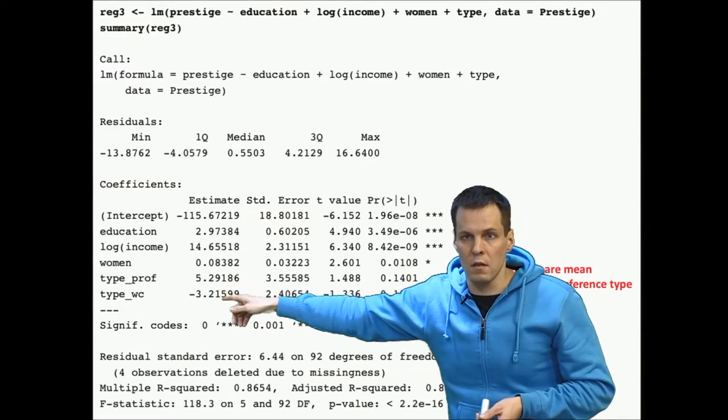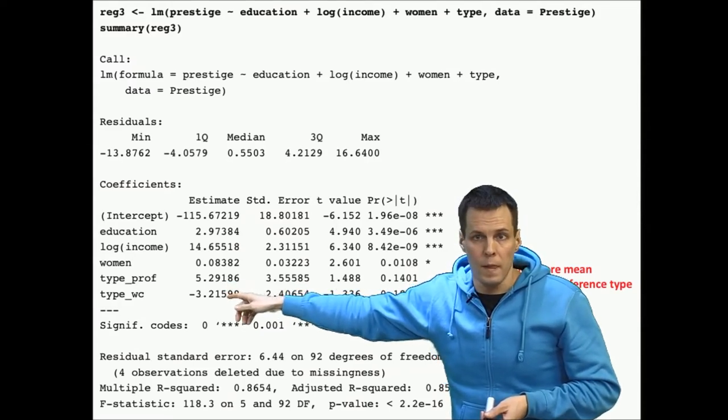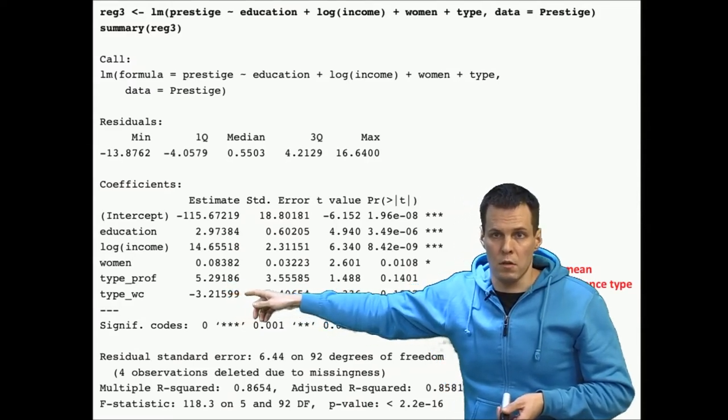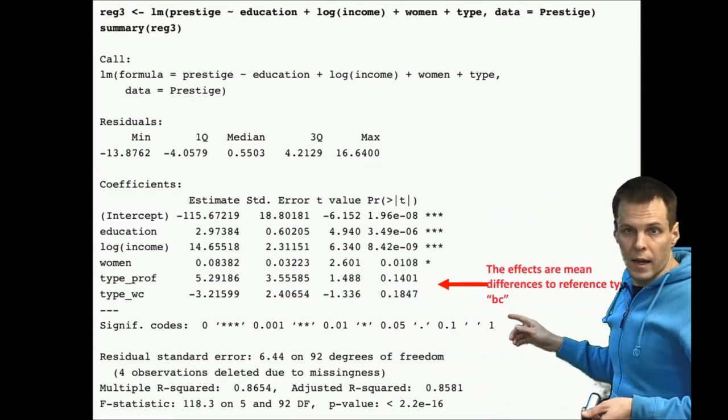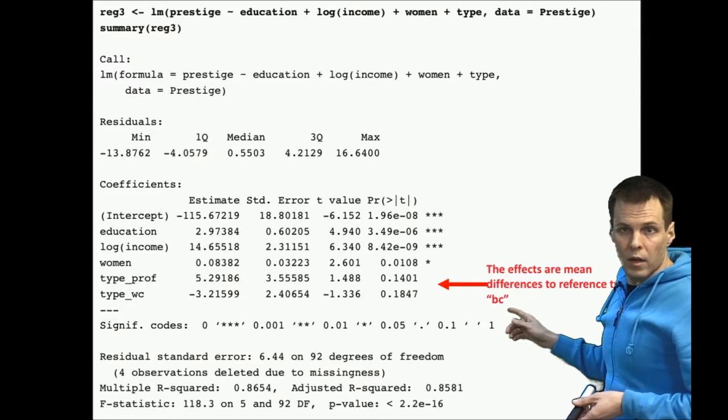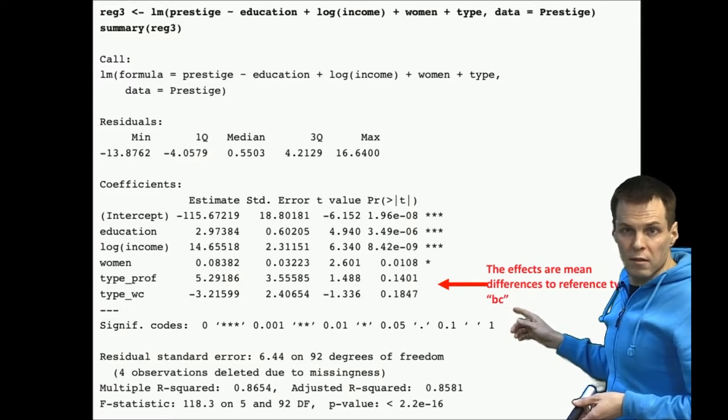These regression coefficients refer to differences between the occupations. One category in the categorical variable is used as a reference category.